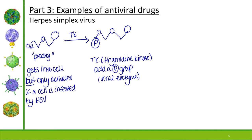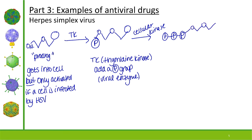For replication we need dNTPs, which have three phosphate groups. After the viral thymidine kinase adds the first phosphate group, a cellular kinase then adds the second and third phosphate groups. What we end up with is the fully functional acyclovir resembling a dNTP — but missing that free 3' OH.